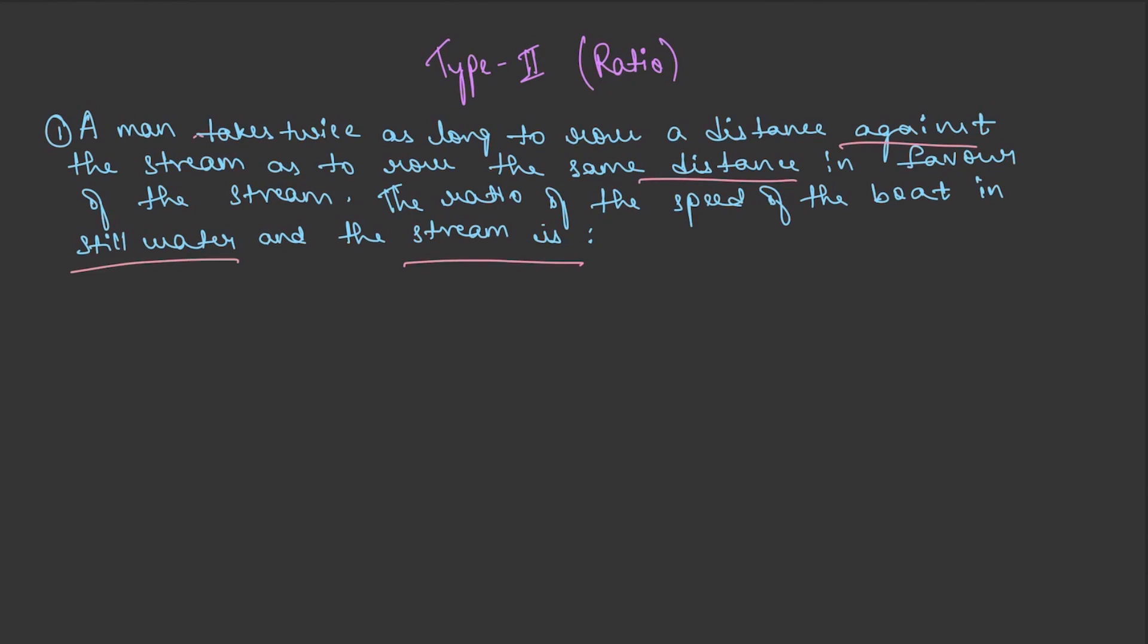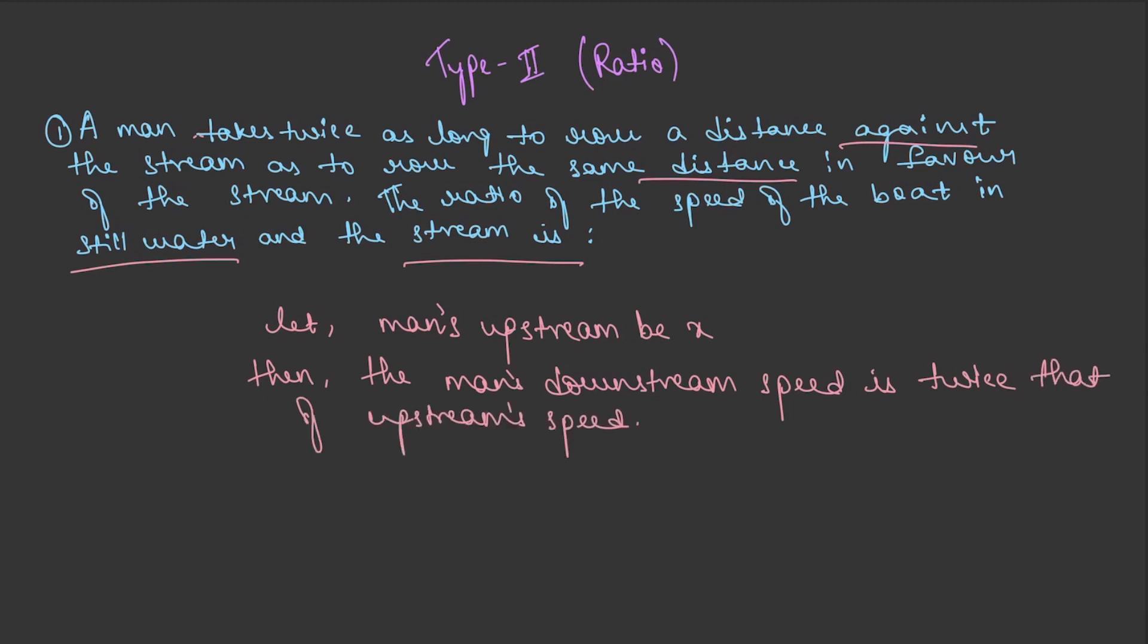So here in this question they are indirectly telling us that let us assume that the man's upstream speed be x. Then the relation which is given in the question is the man's downstream speed is twice that of upstream speed. So this is the information which is indirectly given in the question.